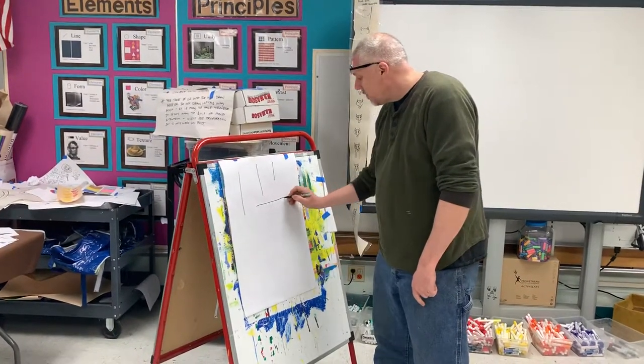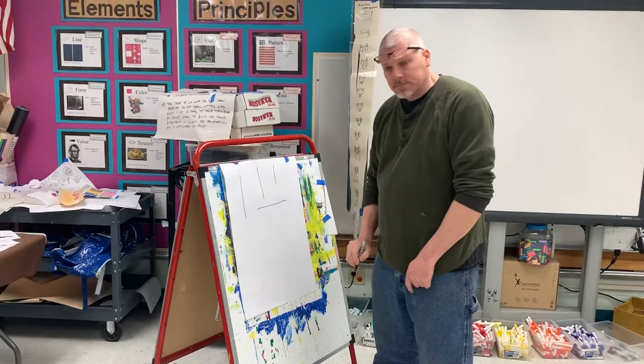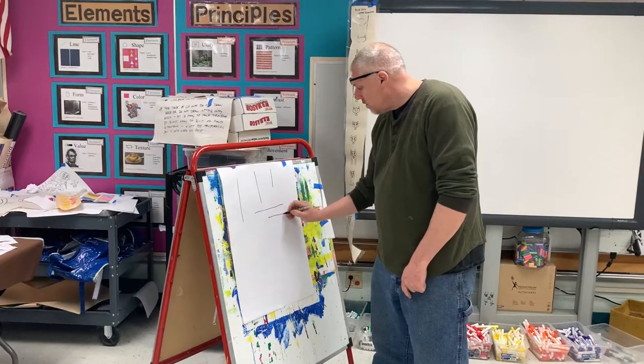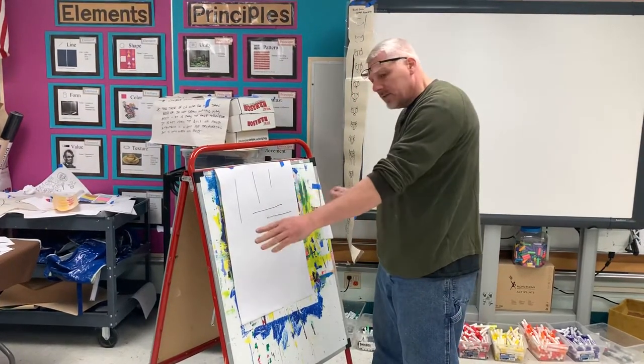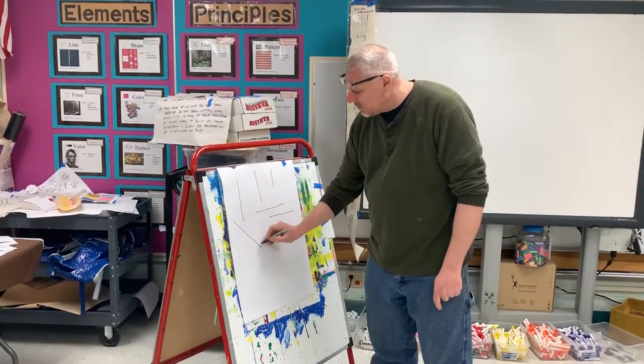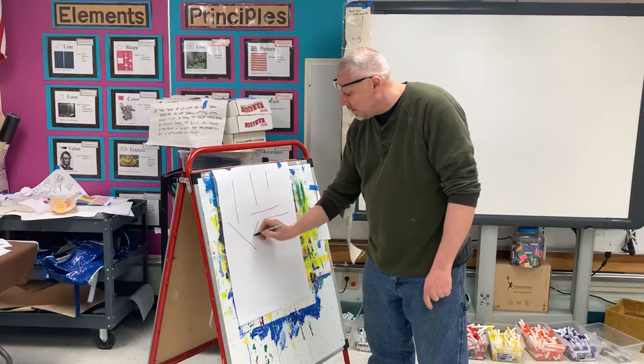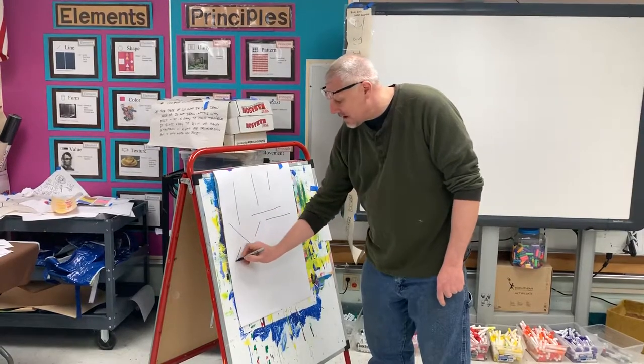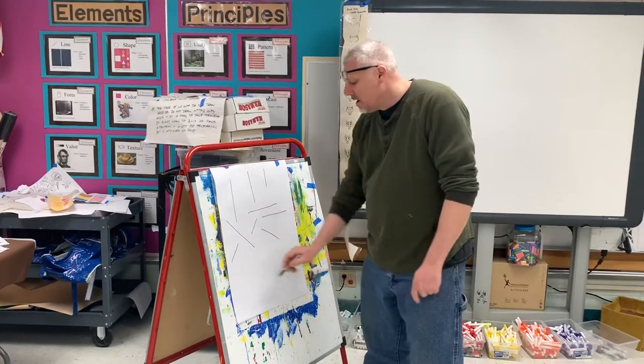Horizontal lines go this way — they go side to side. And diagonals are somewhere in between. Diagonal.